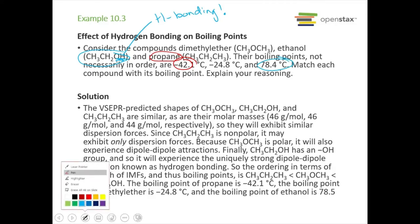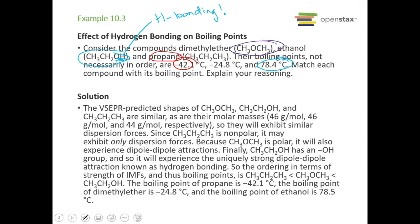Lastly, dimethyl ether has an oxygen in it which gives it some polarity, so it should have some dipole-dipole interactions and dispersion forces. But there's no hydrogen bonded to that oxygen, so it can't hydrogen bond with anything. So it's going to have this middle boiling point of negative 24.8 degrees Celsius.